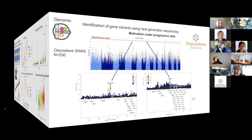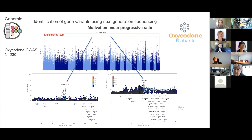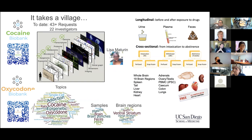For the oxycodone GWAS, we have a low number of animals so far - around 230 - but we've already had two hits emerging. We should have a meeting in about a month with Farmers Growth to get the latest data. The biobank keeps growing - we now have 43 requests from 22 investigators. Investigators are returning to the biobank because they like the data and service, so we're really happy to have returning collaborators.